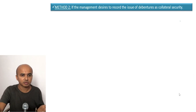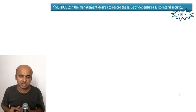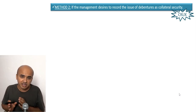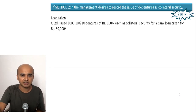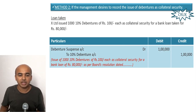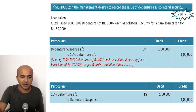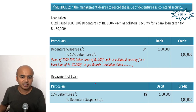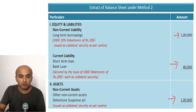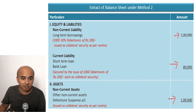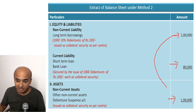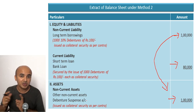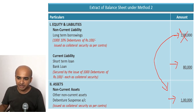The other method is to record it in the books. In this case we use a debenture suspense account — in case of default the debenture will be realized. The entry would be: debit debenture suspense account, credit 10% debentures account. At the time of repayment, a reversal entry is passed. If you look at the balance sheet extract under the second method, there is a long-term borrowing of one lakh — debentures issued as collateral security — and a corresponding asset called debenture suspense account. These two set off against each other, which makes it equivalent to the first method where nothing is recorded.